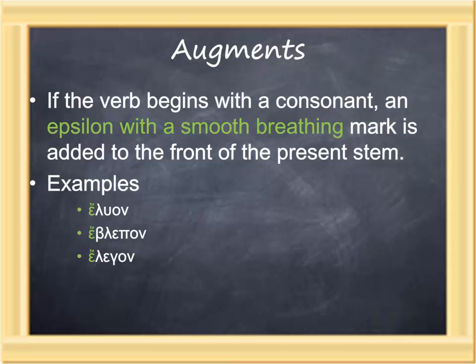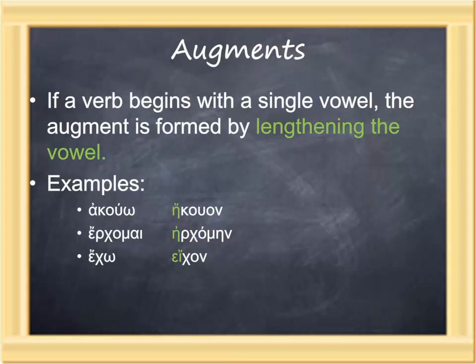On the other hand, if a verb begins with a single vowel, the augment is formed by lengthening the vowel. For example, akouō lengthens the vowel to form the imperfect ēkouon. The present erchomai has its lead epsilon lengthened to an eta, forming the imperfect ērchomēn. And a slightly different way of doing it is visible with echō, where the epsilon is lengthened to a diphthong to form the imperfect ēichon. So we have two ways of forming augments: adding an epsilon to a stem that begins with a consonant, or lengthening the vowel of a stem that begins with a single vowel.